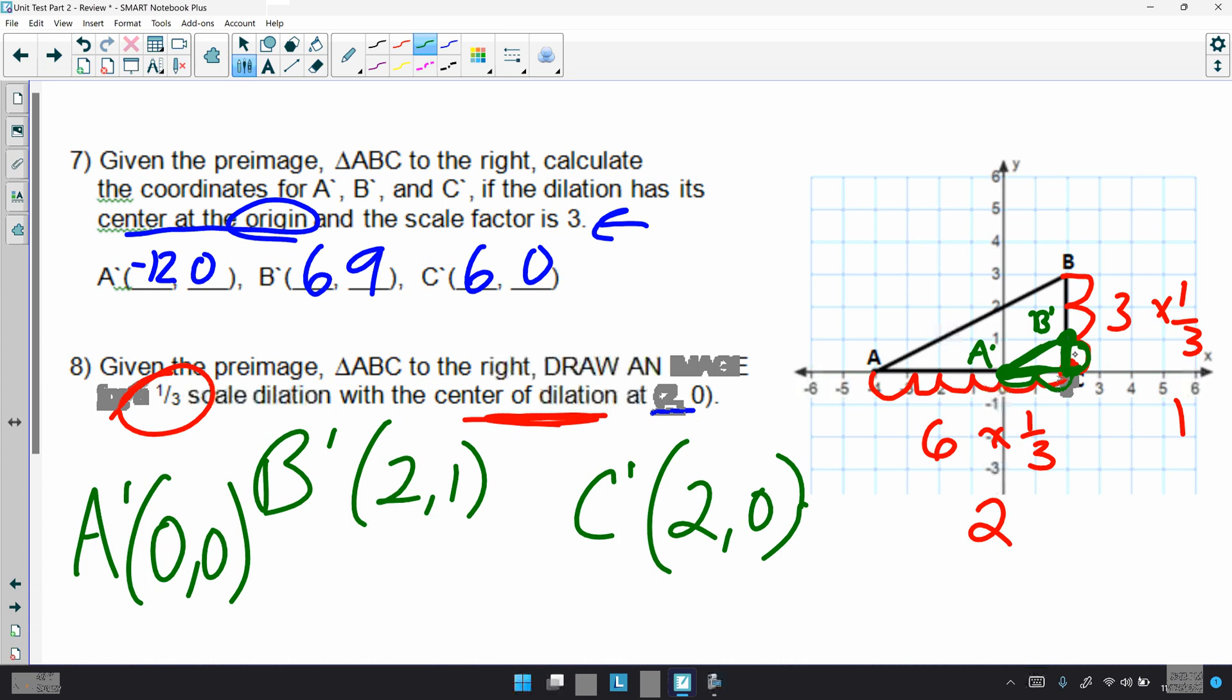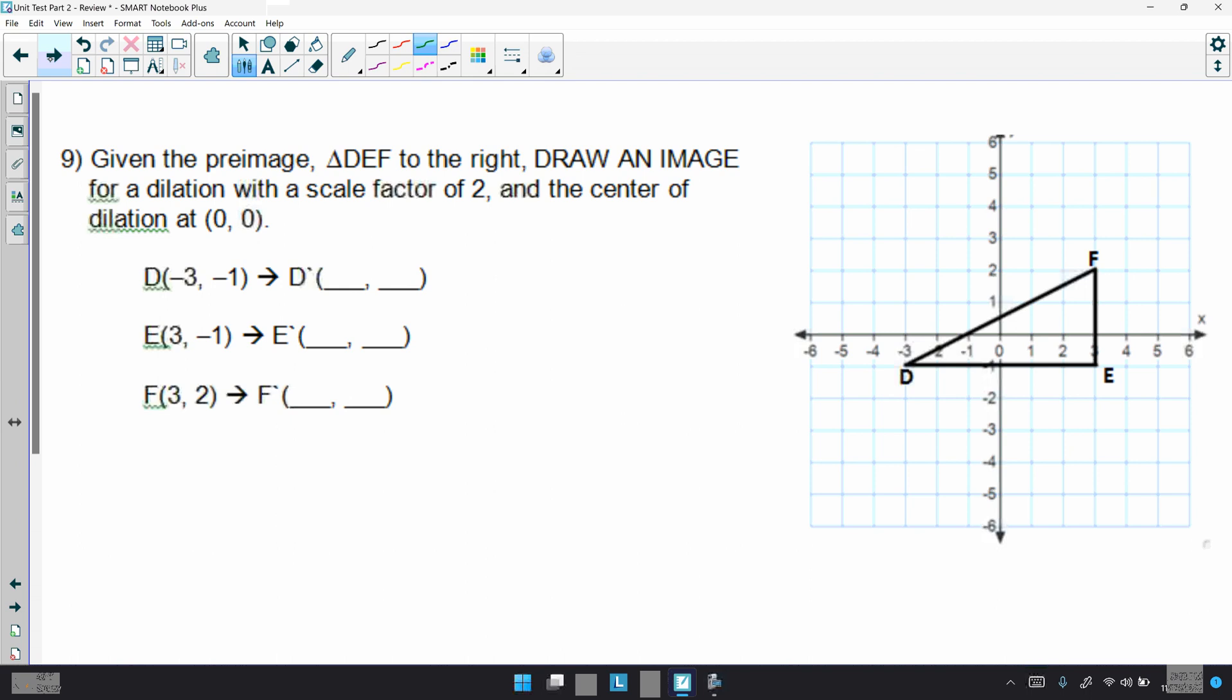Number 9, given the pre-image triangle DEF to the right, draw an image for dilation with the scale factor of 2 and the center of dilation to be 0, 0. So, since it's at the origin, that means we've just got to multiply. So, times 2. Negative 3 times 2 is negative 6. Negative 1 times 2 is negative 2. 3 times 2 is 6. 2 times negative 1 is negative 2. 2 times 3 is 6. And, 2 times 2 is 4. We'll come over here and plot these points. Negative 6, negative 2. That'll be our D prime. 6, negative 2. It's right there. That's going to be our E prime. And, F will be 6, 4. So, come over to 6, up to 4, F prime. And, here's our new triangle.